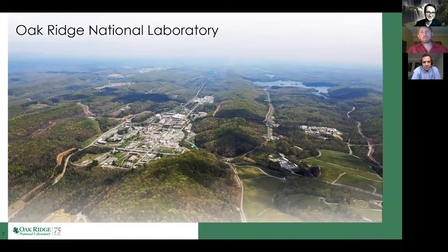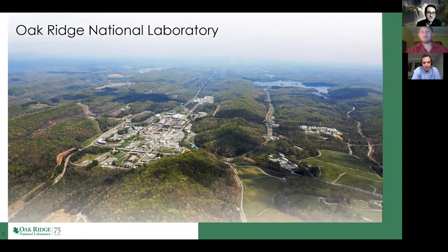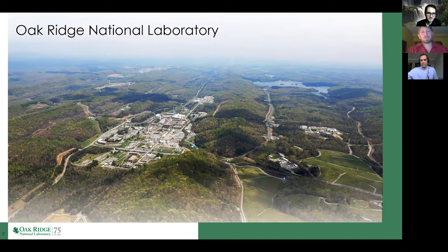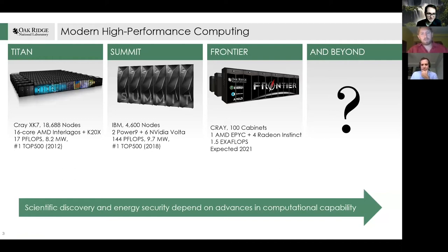Here is a view of Oak Ridge National Laboratory in Tennessee — a Department of Energy research facility where I work. The campus includes material science research buildings, the Spallation Neutron Source (one of the brightest neutron sources in the world), and the High Flux Isotope Reactor, which creates medical isotopes. At the center of the campus is our high-performance computing facility, which is critical to how we perform science using modeling and simulation. Oak Ridge is currently home to the world's most powerful supercomputer, called Summit.